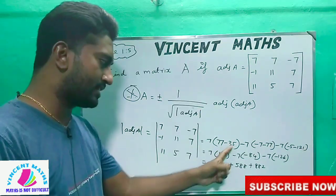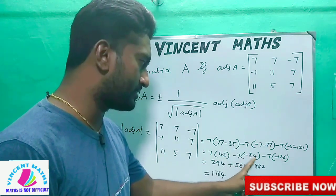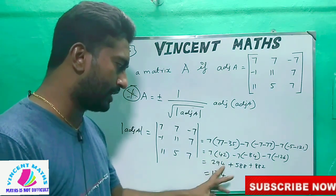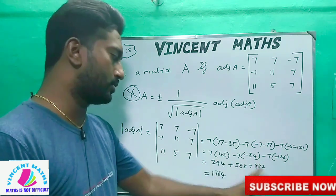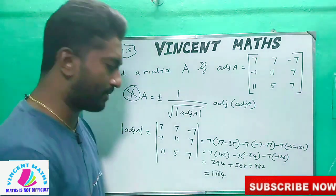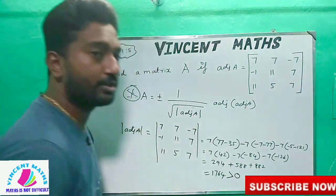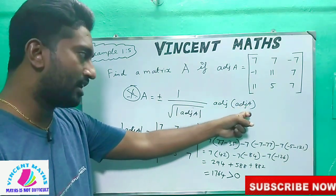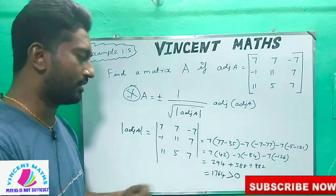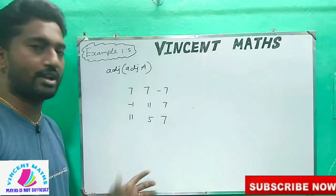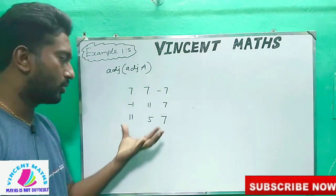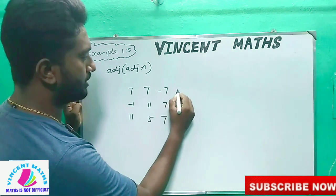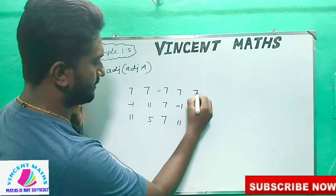Continuing with the matrix entries: 8, 8, 8, 9, 9, 9, 9, 9, 10, 11, 12, 12, 12, 12, 12, 12, 12, 12, 12.